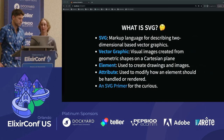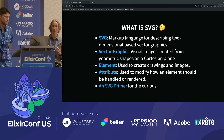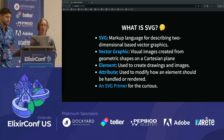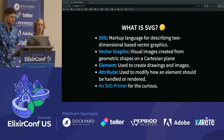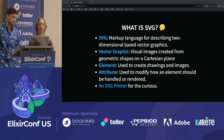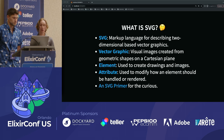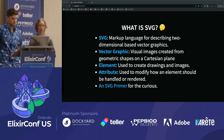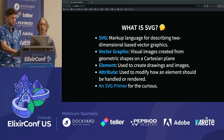What exactly is an SVG? At a high level, SVG, or Scalable Vector Graphic, is a markup language for describing two-dimensional vector graphics. Vector graphics is a form of computer graphics in which visual images are created directly from geometric shapes, such as points, lines, curves, and polygons. Elements such as polyline and text are used together to create visuals, and attributes such as fill and stroke modify these elements.